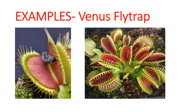Some examples are Venus fly trap. As you can see in the picture, there is an insect which is between the two sides of this Venus fly trap, and this is how it closes its two parts and the insect is trapped.